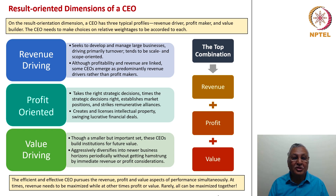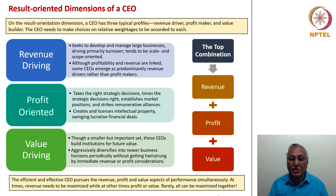The top combination for any organization is a combination of revenue, profit and value maximization. The efficient and effective CEO pursues these three aspects of performance very diligently, assiduously and simultaneously. It is understood that at times revenue needs to be maximized, while at other times profit or value. Rarely can all be maximized together — there are trade-offs which the CEO needs to exercise.